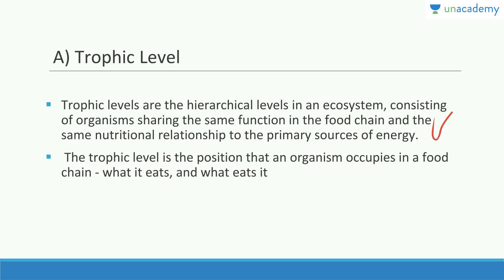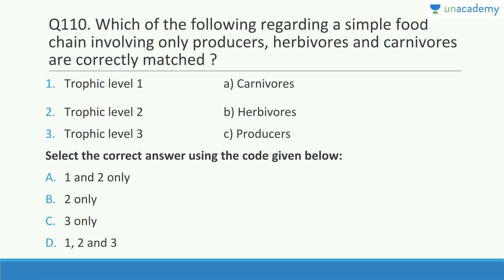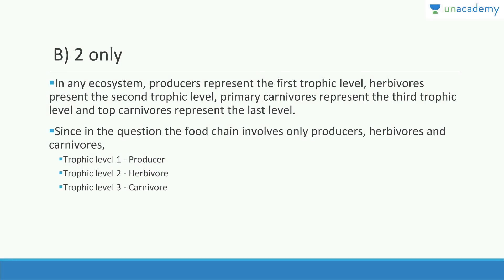In a simple food chain involving only producers, herbivores, and carnivores: trophic level one is the producer — not carnivores — trophic level two is herbivores, and trophic level three is carnivores. The answer is B. In any ecosystem, producers always represent the first trophic level, herbivores the second, primary carnivores the third, and top carnivores the last.